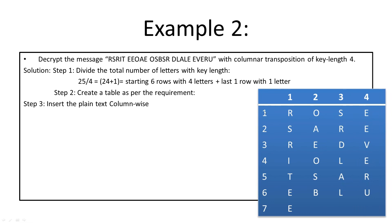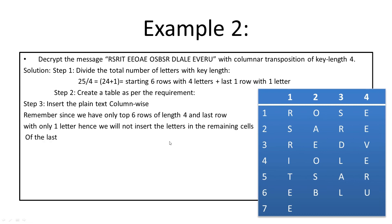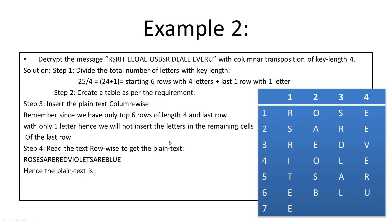Only the first six rows have four letters; the seventh row has only one letter. Now step four: read the text row-wise to get the plaintext. First row: R O S E. Second row: S A R E. Third row: R E D V. Fourth row: I O L E. Fifth row: T S A R. Sixth row: E — and seventh row: E. Writing it all out row-wise and adding spaces gives the decrypted message: 'Roses are red, violets are blue.'